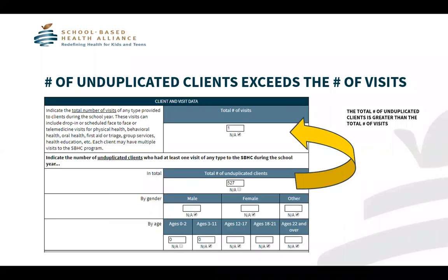The first common error we observe in NQI reporting is that the number of unduplicated clients exceeds the number of visits. In this example, you can see that this school-based health center saw 527 clients during the 2017-18 school year, but they reported only one visit. The number of visits should equal or exceed the total number of unduplicated clients.